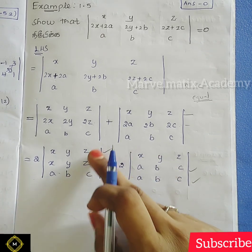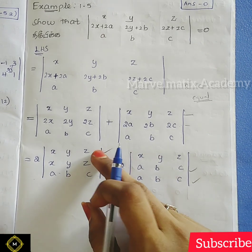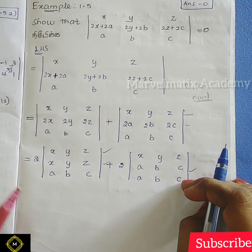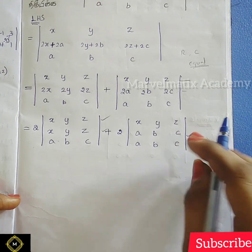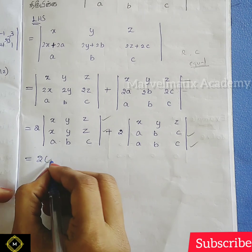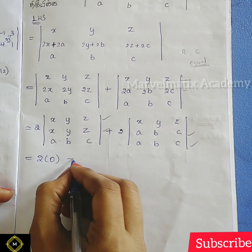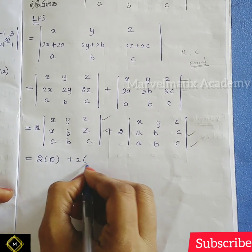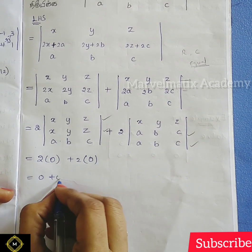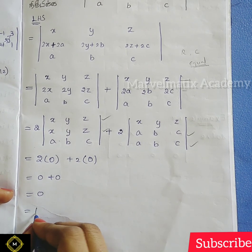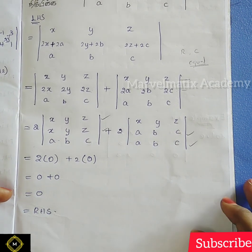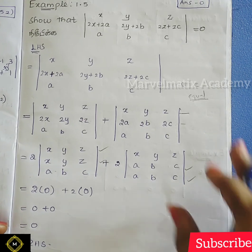So one determinant, two row — at this point, equal values have been given, so that's the solution. It depends on the number zero. So 2 plus 0, let's say 0 plus 0, which is equal to zero, which is the right-hand side. Okay?